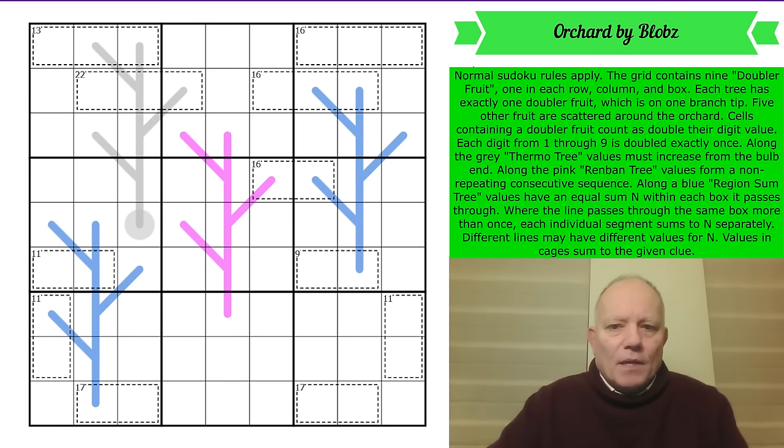Each tree - cells containing a doubler fruit count as double their digit value for rules we will come to. Each tree has exactly one doubler fruit on one branch tip, so one of those will be a doubler. I think we can assume that the tree doesn't have a doubler anywhere else. If that turns out to be wrong, we may be coming back to the beginning and starting again. I think the wording says each tree has one doubler on it and it's on a branch tip. Five other fruit are scattered around the orchard. Yes, they're not on the trees. Cells containing a doubler fruit count as double their digit value. Each digit from one through nine is doubled exactly once. That's going to be worth remembering.